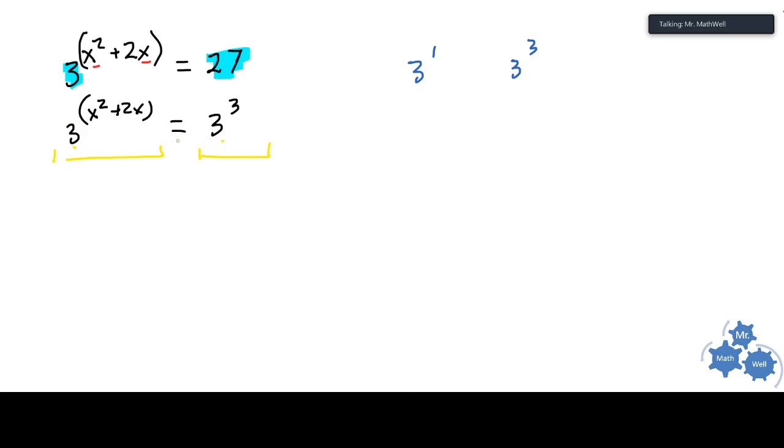So if they are equal to each other, that means that the corresponding parts of equal things are also equal. So by transforming this 27 into a base of three, we can get rid of the power part of it, and I can just go ahead and write x squared plus two x equals three. So now you get rid of the exponent, and now it's just a quadratic.